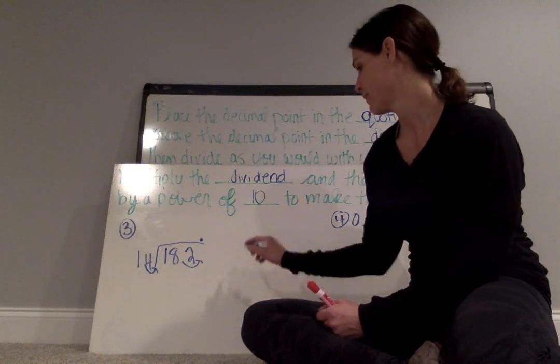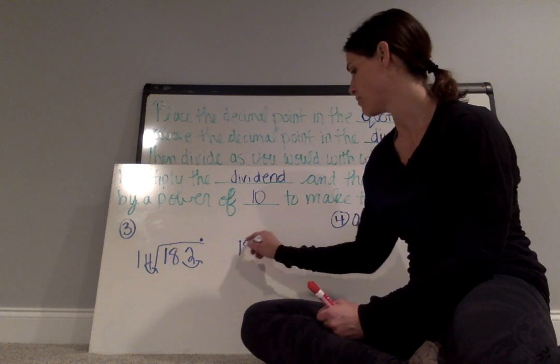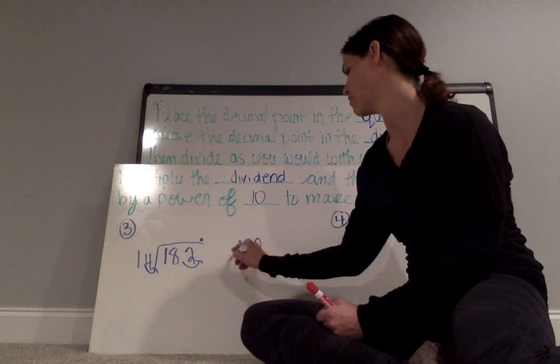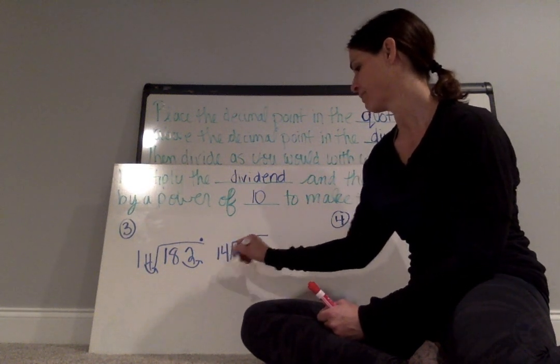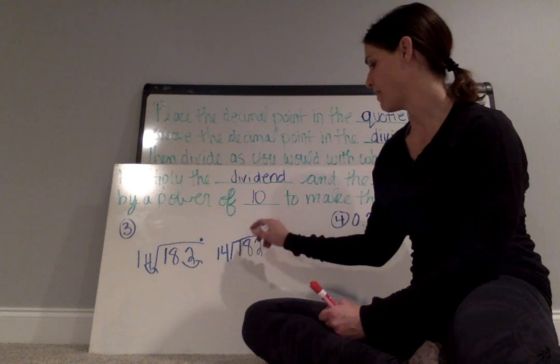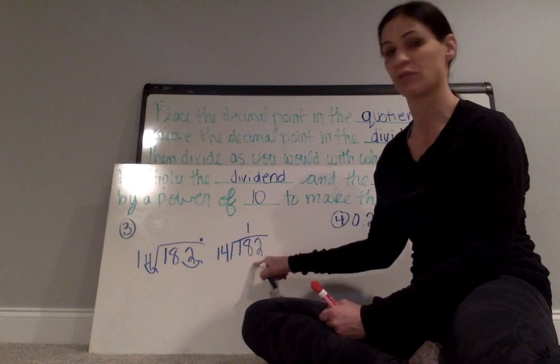Then I am going to divide. If you want to rewrite the problem, you can do that. 182 divided by 14. 182 divided by 14 is 1, so the 1 goes above the 8.